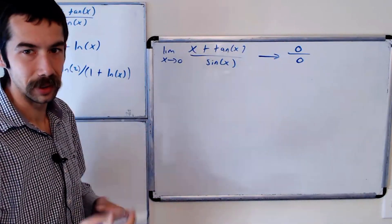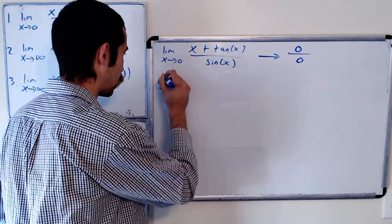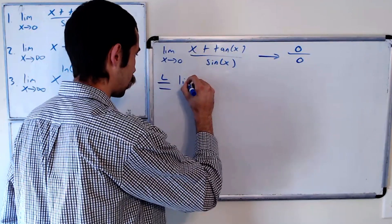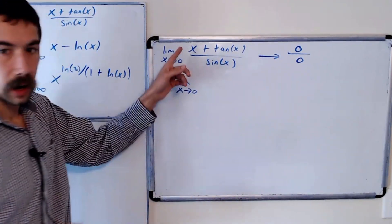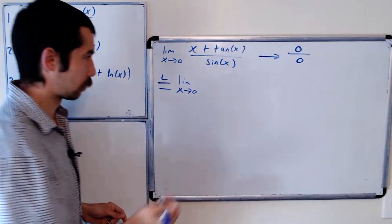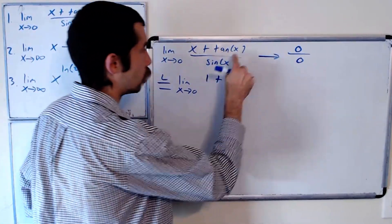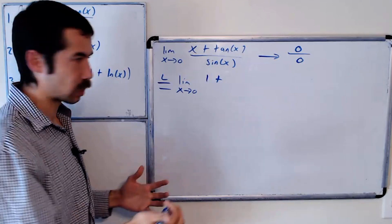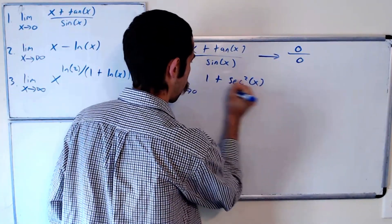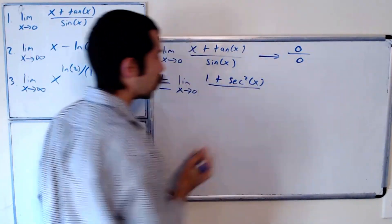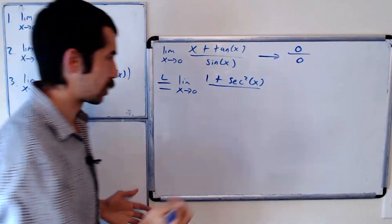We have a fraction, so we're definitely allowed to use L'Hopital's rule. So this is equal to, by L'Hopital's rule, the limit as x goes to zero of the derivative of the top: one plus — what's the derivative of tangent? That's secant squared x — over the derivative of the bottom. What's the derivative of sine of x? It's cosine of x.